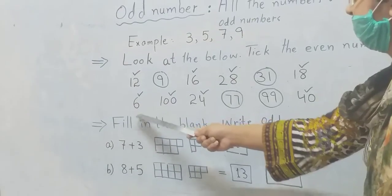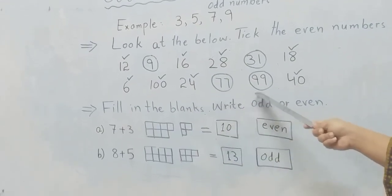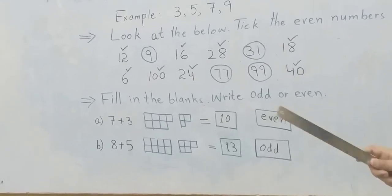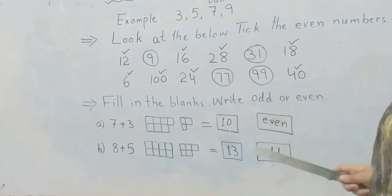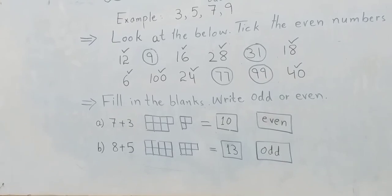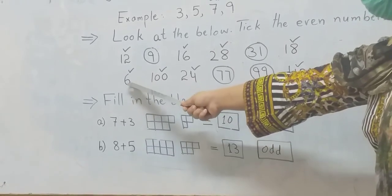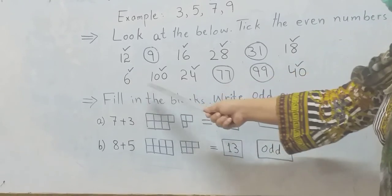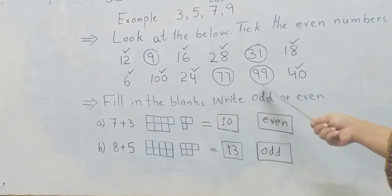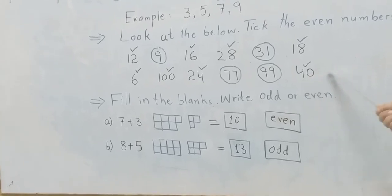Second set of numbers: six, hundred, twenty-four, seventy-seven, ninety-nine, forty. Tick the even numbers and circle the odd numbers. Six — even number. Hundred — even. Twenty-four — even. Seventy-seven — odd number. Ninety-nine — odd number. And forty is again an even number.